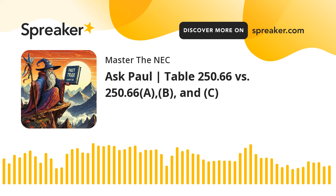Good morning, everybody. Paul Abernathy here. Welcome to another glorious day here in Texas, or wherever you're at. As long as you wake up, it's a glorious day. Today on this mobile podcast, I'm going to answer a question that was submitted to me, asking me to explain Table 250.66 versus 250.66 A, B, and C, and how they differ. Since it's a mobile podcast, we'll keep it as easy listening and explain the applications and how this all works out.